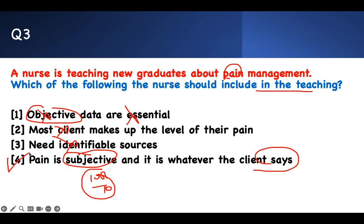Pain is subjective — whatever the client says, it is. If they say 10 out of 10, you take it as 10 out of 10. It is whatever the client says — that is something you have to know. Pain is whatever the patient says it is. If they say zero pain, you take it. If they say 5 out of 10, you take it. Whether they show it or not does not matter.